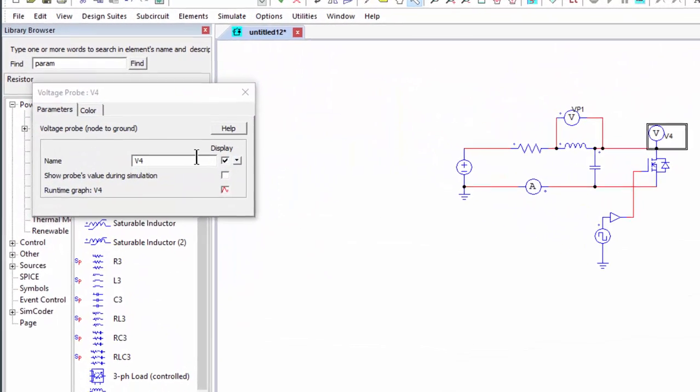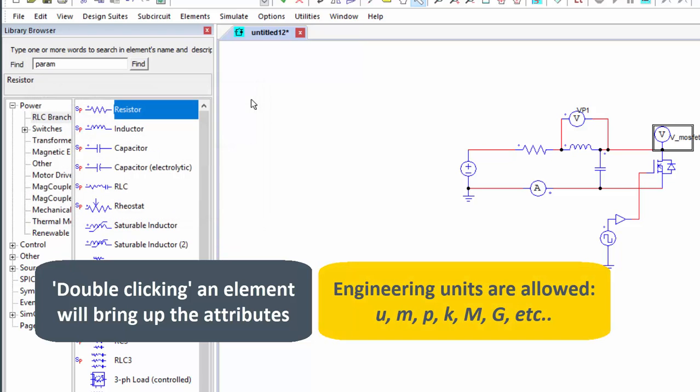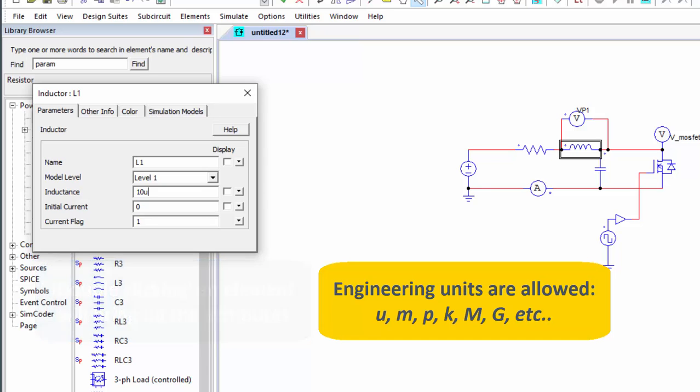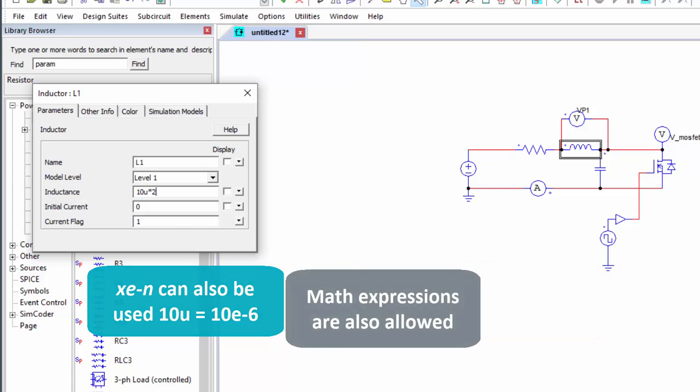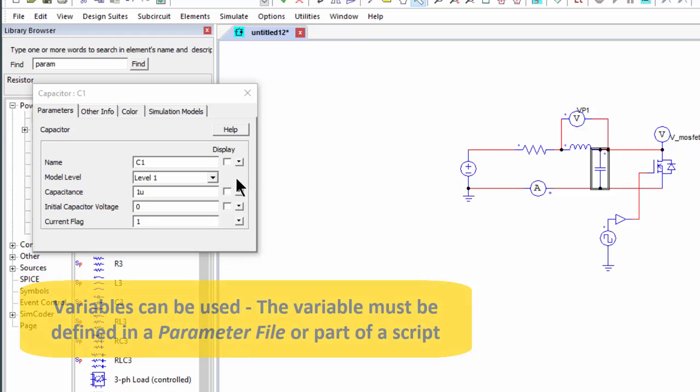So let's rename some of these so that double-clicking brings up the attributes box, so we can change that to V underscore MOSFET. We can then also come in here and change these values. So we could put 10 micro or E to the minus 6 if you want to, but you can use the engineering units. You can do math in here as well, so if we multiplied that by 2, we'd use 20 micro. We could go 1 kilo.